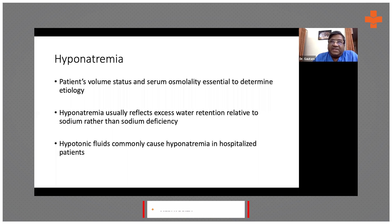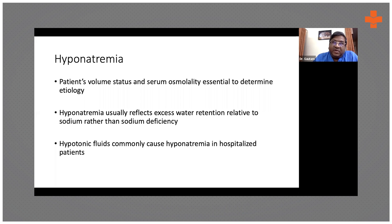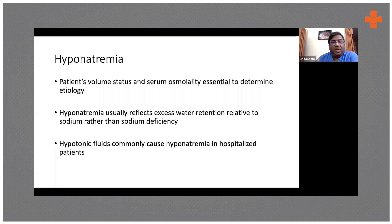Water excess relative to sodium is the main cause of hyponatremia. In the hospital, hyponatremia is the most common electrolyte abnormality we see in hospitalized patients. If someone receives 5% dextrose or D5 water, which is a hypotonic fluid — as opposed to normal saline which is isotonic — they are more prone to develop hyponatremia.